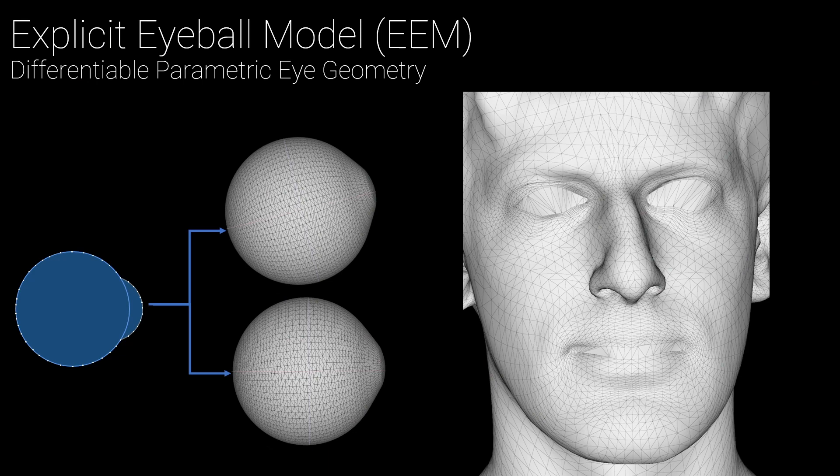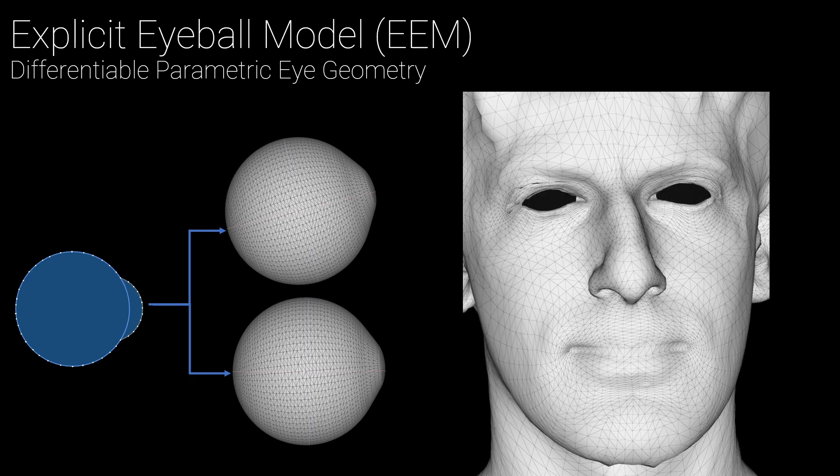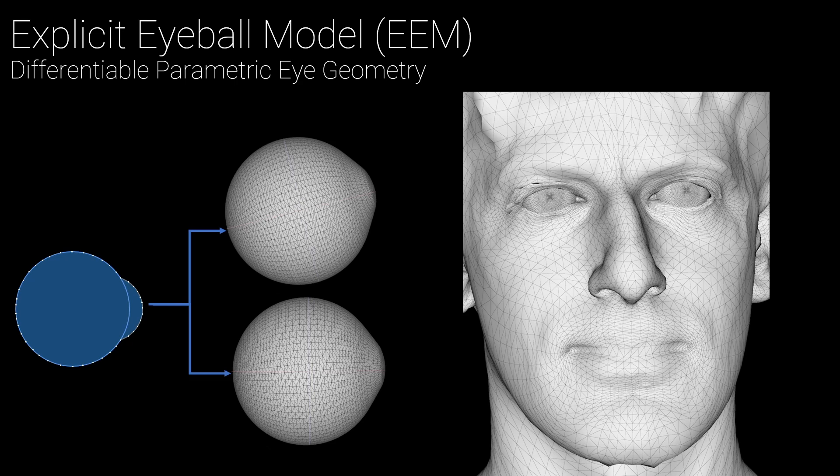Previous methods based on deep appearance models used a facial mesh with triangles covering the eyeballs since they could not track the eyes. Now that we can track the eyes, we introduce explicit eyeball geometry controlled by gaze signals to the mesh. First we remove the triangles covering the eyes since the eyelids are tracked fairly well. Then we place the new eyeball geometry in place.